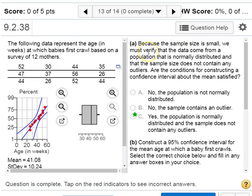And so that's what we're addressing first here in this problem: if we have a small sample, we need to verify that the data comes from a population that is normally distributed and that the sample does not contain any outliers.